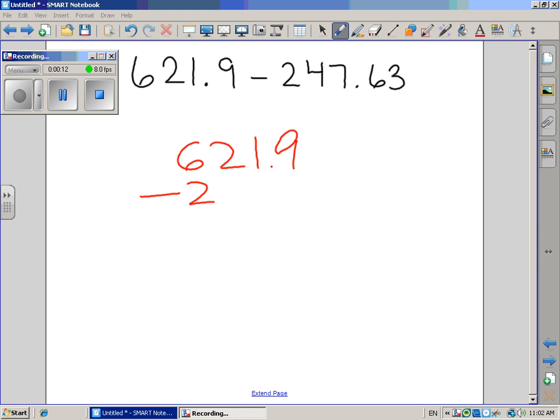Minus two hundred forty-seven and sixty-three hundredths, or 247.63. I wrote it this way so it would be easier and I don't have to do it mentally. When writing it, I have to make sure my decimals are lined up.